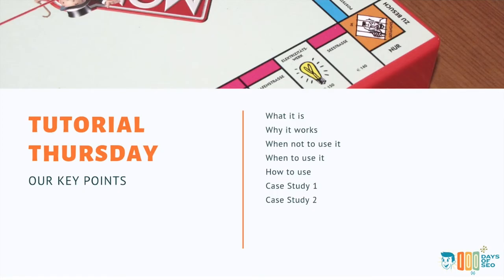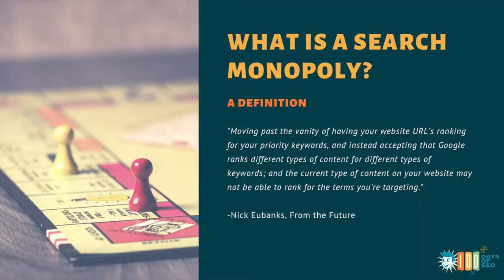Here's what we're going to talk about today on Tutorial Thursday. When we talk about creating a search monopoly, we're going to talk about what it is, why it works. I'm going to give you two good examples of when not to use this strategy, some examples of when to use it, I'm going to teach you how to use it, and then I'm going to give you a couple of case studies of where I've seen it used really effectively.